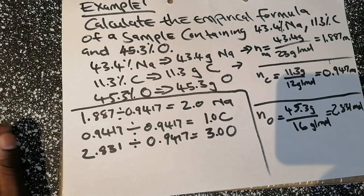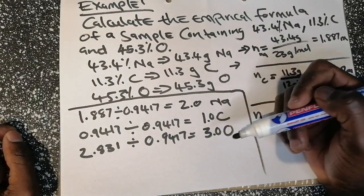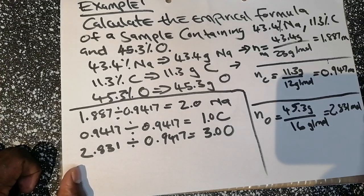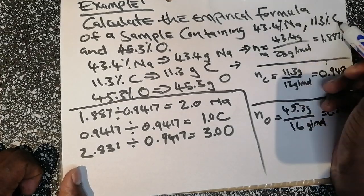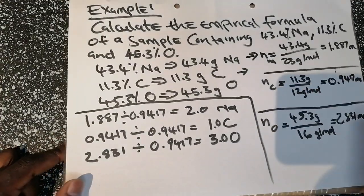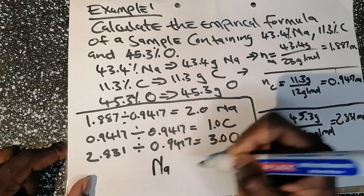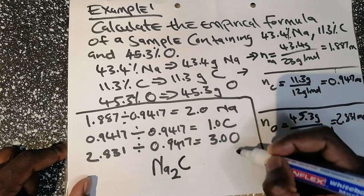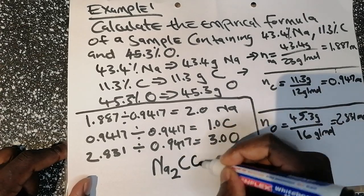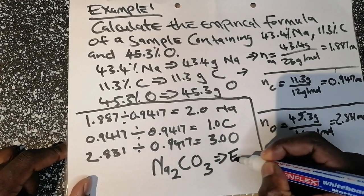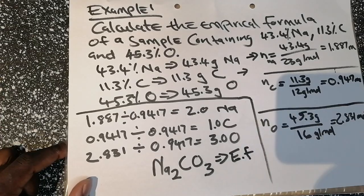Step four says if we get a decimal in step three, multiply everything by 2. Here we did not get any decimals — the values are whole numbers: 2, 1, and 3. So we can write our empirical formula. Following the order given — sodium, carbon, oxygen — our empirical formula is Na₂CO₃.